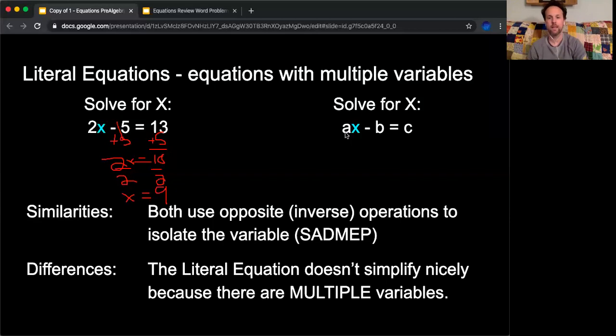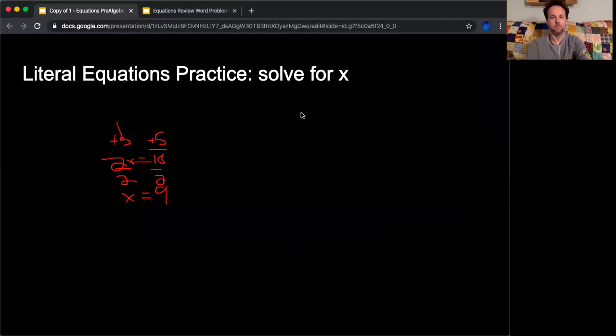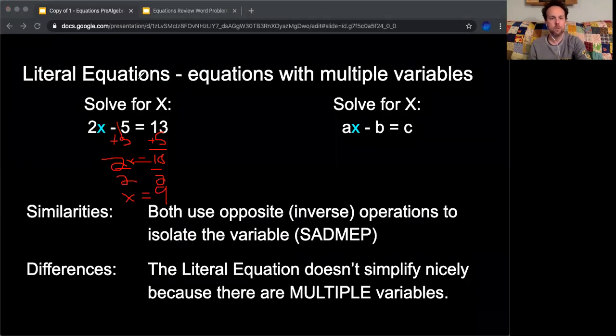I don't know what the value of A is. I don't know what the value of B is. I don't know what the value of C is. But what I do know is that if I want to try and isolate x, I'm starting out with a negative B, opposite of negative B. The opposite of negative B is positive B. So if I add B to both sides, B minus B, those cancel each other out. So I'm left, instead of 13 plus 5, I'm left with C plus B.